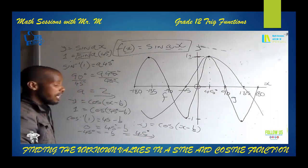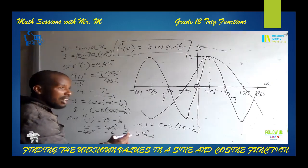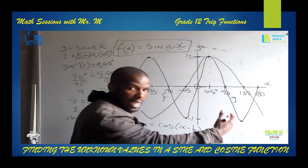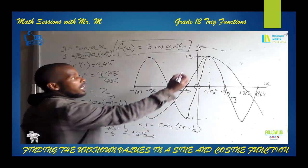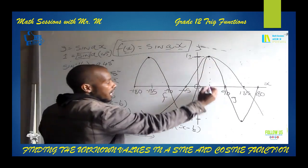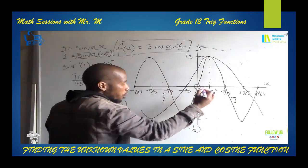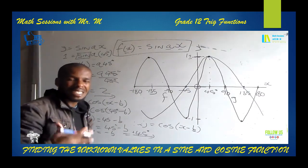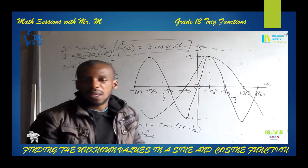So the cosine graph is shifted 45 degrees to the right, which is positive. This proves the turning point to be correct. That is how easy and straightforward it is to find A and B. And that's all from me, Mr. M. Have a wonderful day and a great one. God bless you. Bye-bye.